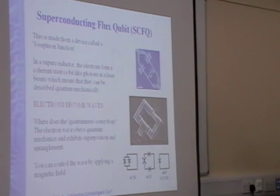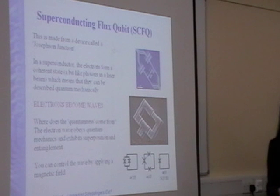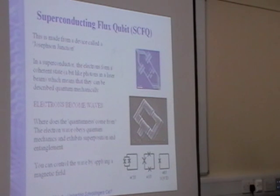Where does the quantumness come from? Well, the electron wave obeys the quantum mechanical equations. We find that we can describe the wave using these mathematical equations quite well. The wave also exhibits the properties of superposition and entanglement that I talked about earlier.